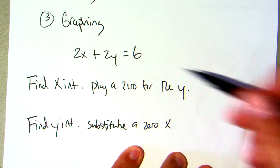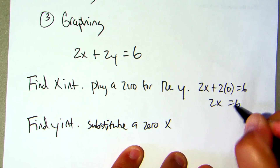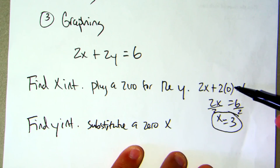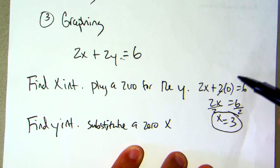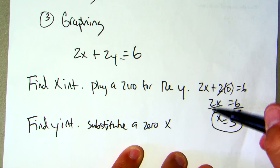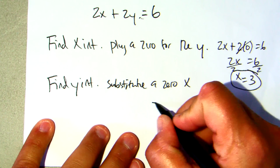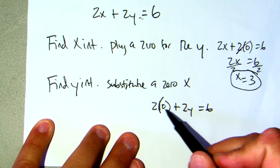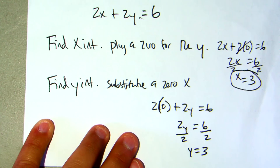We're looking for x, so we say 2x plus 2 times 0 equals 6. That gives 2x equals 6; divide both sides by 2 and x equals 3. Anything times 0 cancels out. To find y, we do the opposite: 2 times 0 plus 2y equals 6, so 2y equals 6; divide by 2 and y equals 3.